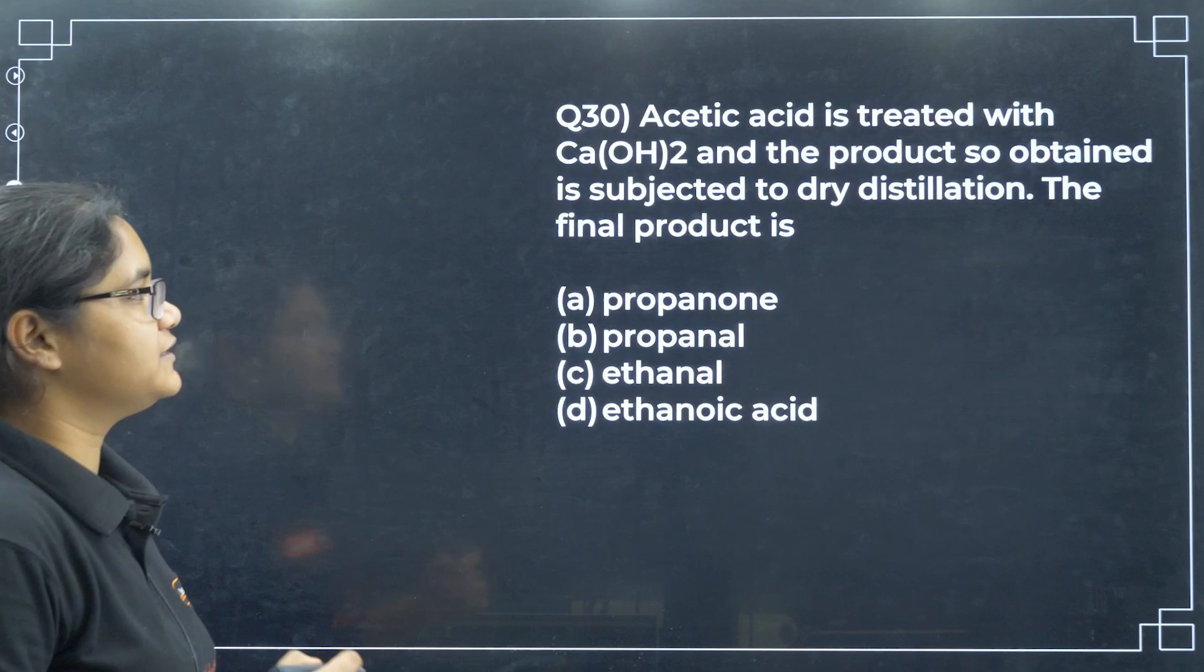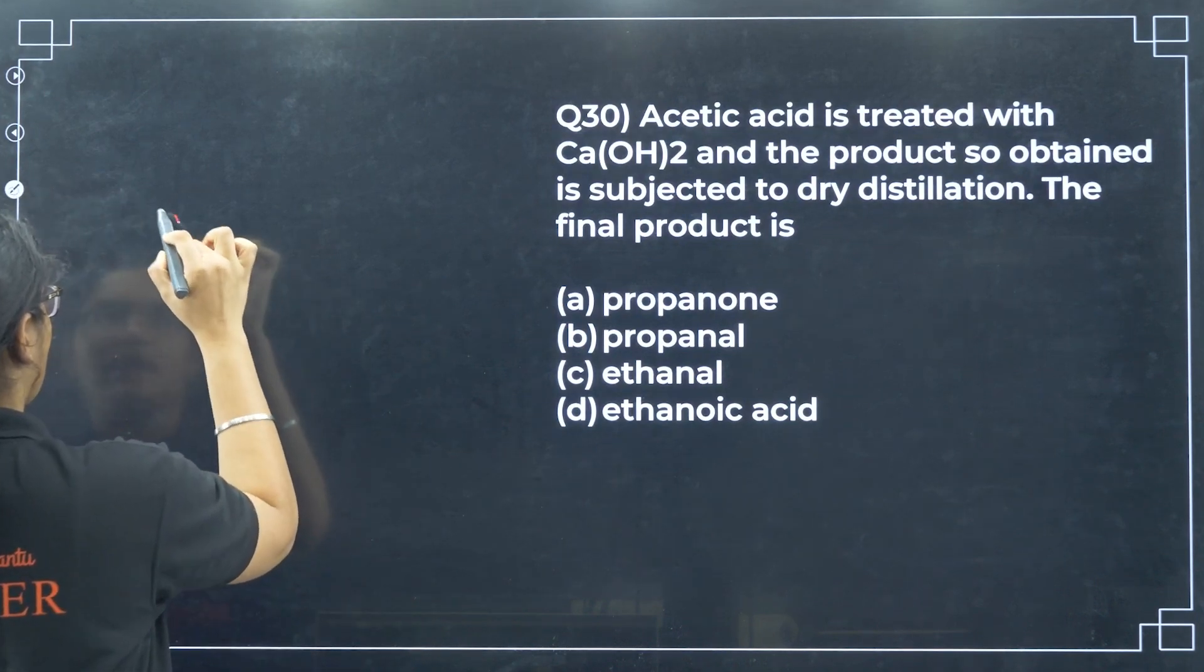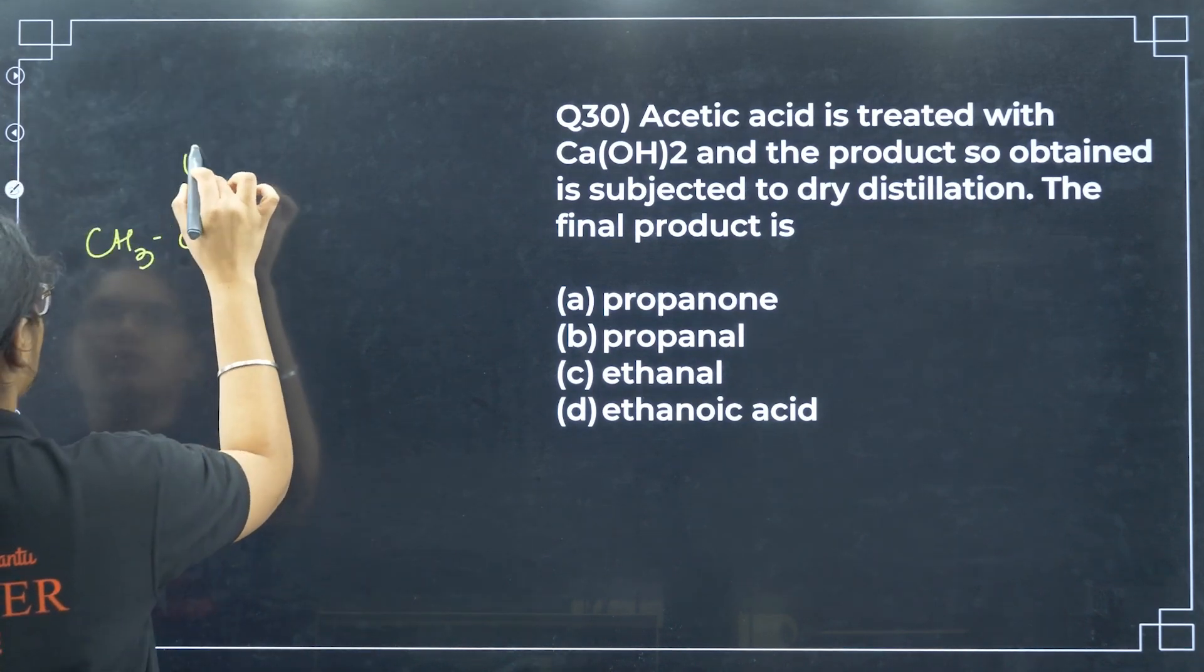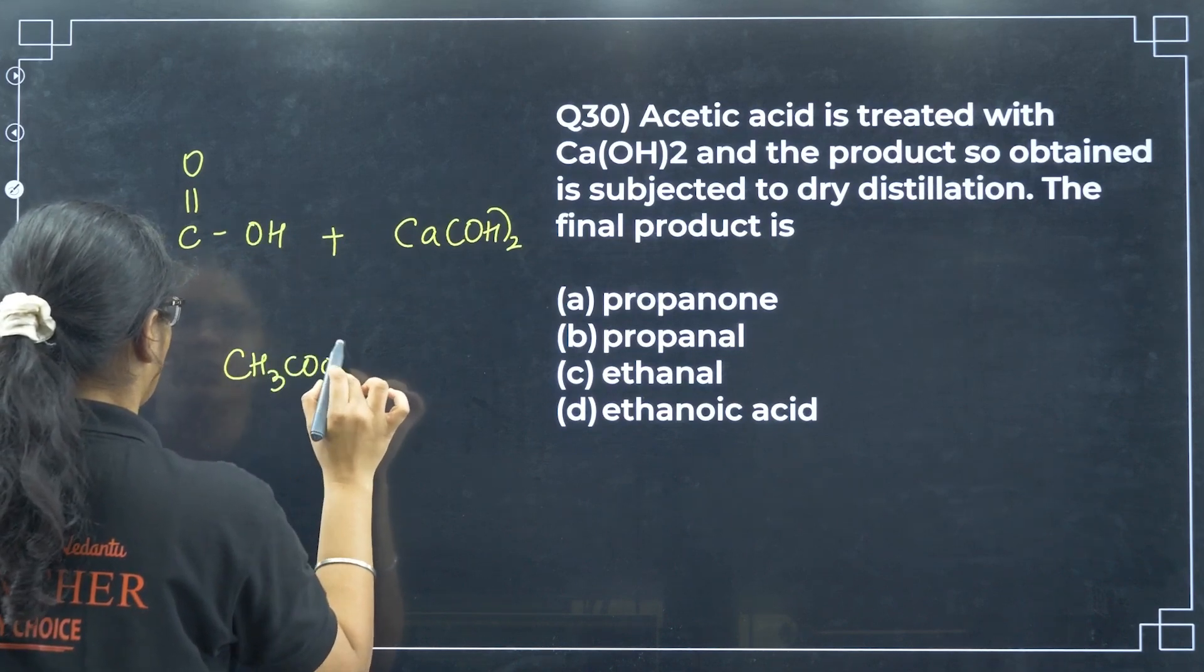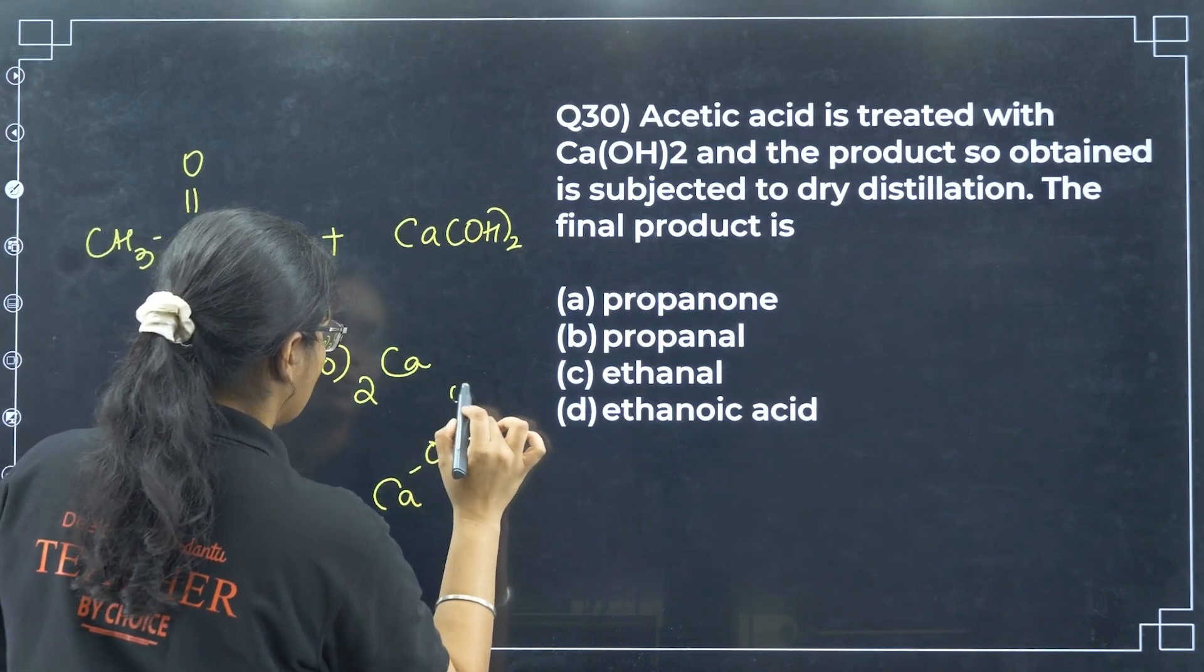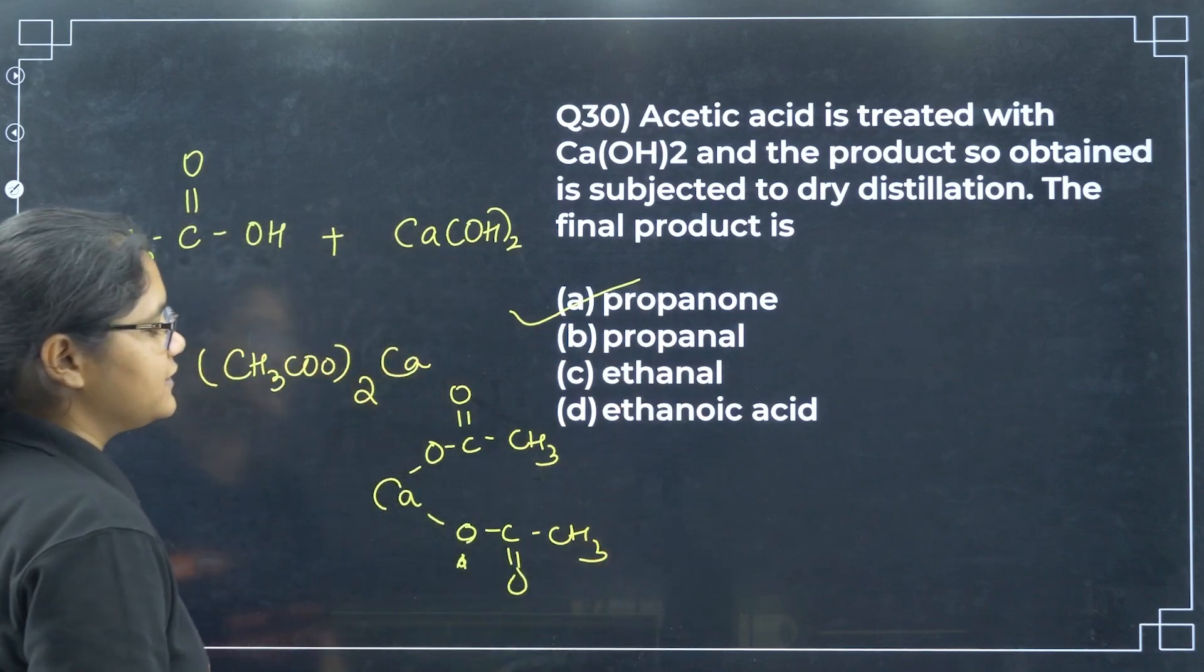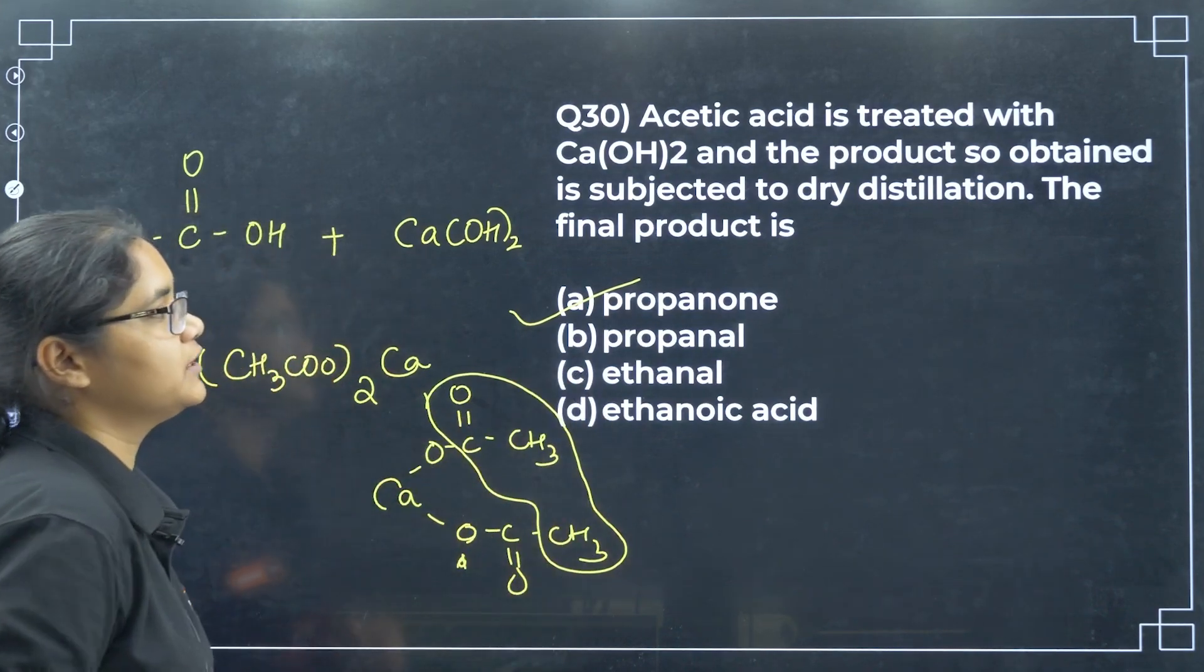Next, acetic acid is treated with calcium hydroxide and the product obtained is subjected to dry distillation. If I have Ca(OH)2 and you are reacting it with acetic acid, you will get (CH3COO)2Ca calcium acetate. So now what happens here, there is dehydration taking place and finally you will get acetone as one of the products, CH3COCH3, and CaCO3 will form. Option A here.